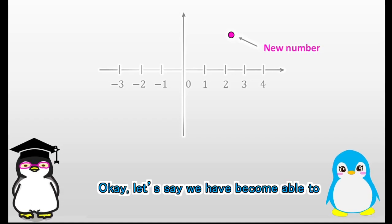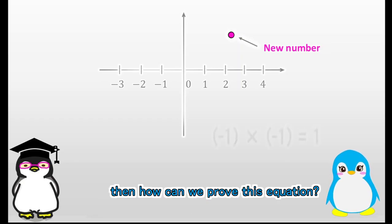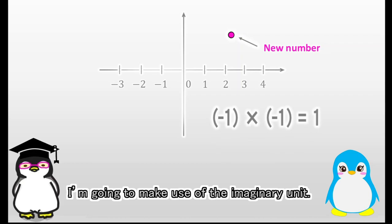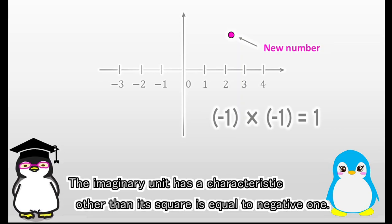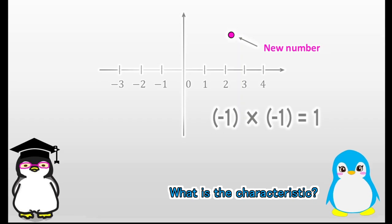Okay, let's say we have become able to catch new numbers, then how can we prove this equation? I'm going to make use of the imaginary unit. The imaginary unit has a characteristic other than its square is equal to negative 1. What is the characteristic?